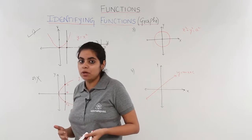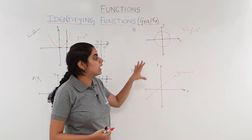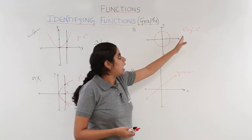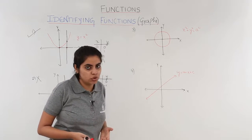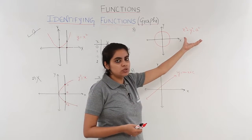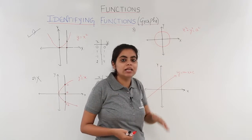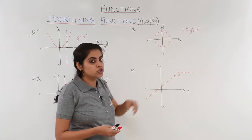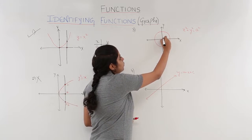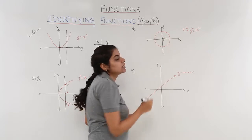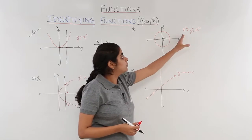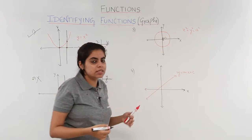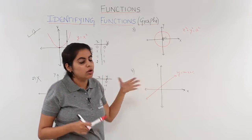We saw one function and one not a function. Let's look at two more examples for practice. This is the third graph — a circle. The equation x squared plus y squared equals a squared is the standard equation of a circle where a is the radius and the center is at the origin. We only need to check whether this is a function or not.